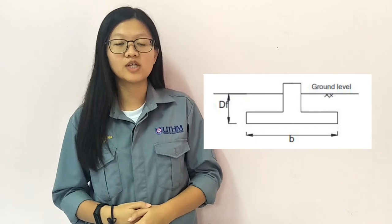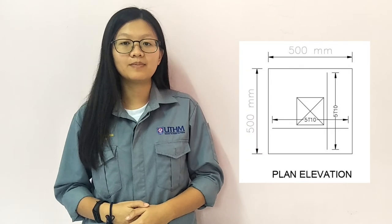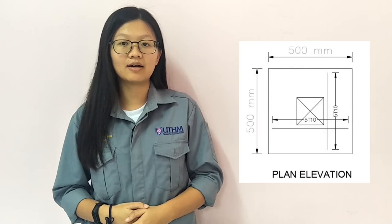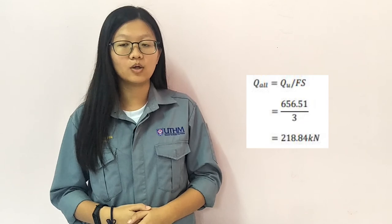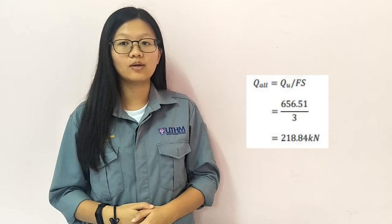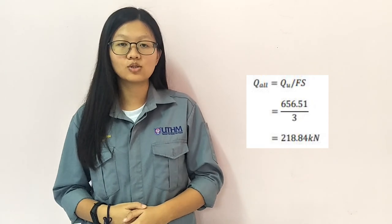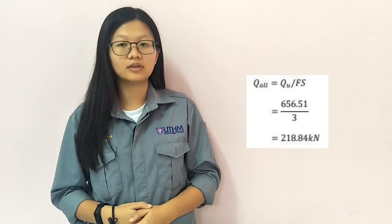Initially, we will use a shallow foundation with a square pad footing for the building. We suggest a dimension of 500mm and calculated the allowable bearing capacity QO, and the value we obtained is 218kN. This value is higher than the column load of groups B and C.